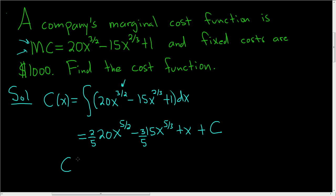So our cost function so far is equal to, well, let's see. 5 goes into 20 four times. 2 times 4 is 8. So we get 8x to the 5 halves. 5 goes into 15 three times. And 3 times 3 is 9. So we get 9x to the 5 thirds plus x plus our constant.